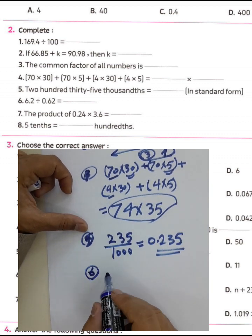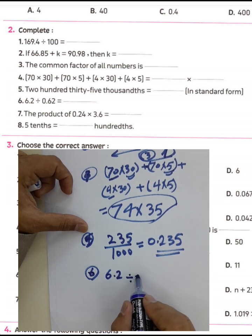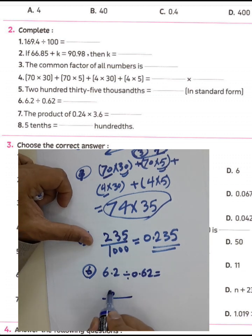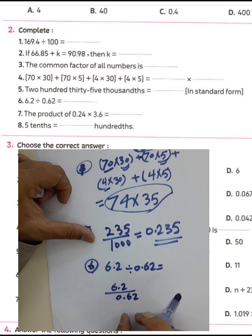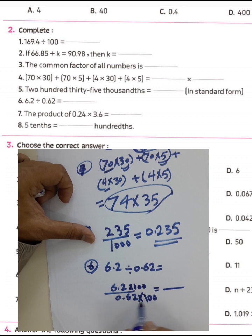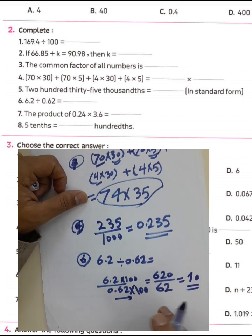Question number six: 6.2 divided by 0.62. We write this as 6.2 over 0.62. We can solve this by converting the denominator — multiply both numerator and denominator by 100, because the decimal point is two places in. Moving the point two places to the right gives us 620 over 62, and the result equals 10, because 620 divided by 62 equals 10.